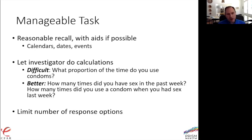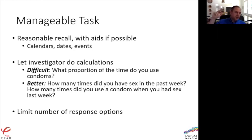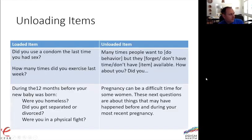It's better not to ask people to do calculations. If you ask 'what percent of the time do you use condoms when you have sex,' that actually requires two numbers — how many times did I have sex, and how many of those did I use condoms. As an investigator, you can help by breaking this down: 'How many times did you have sex in the last week? Four. Of those four times, how many times did you use condoms?' Then you can do the calculations.